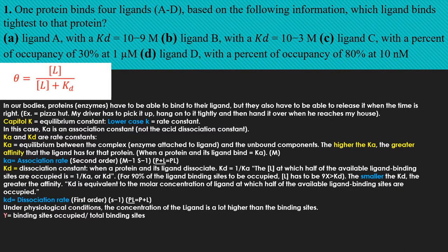For question one, proteins and enzymes in our bodies must bind to their ligand but also release it when the time is right. For example, like a pizza delivery driver who has to pick up the pizza, hold it tightly, and then hand it over when he reaches your house — and it's the same with enzymes.